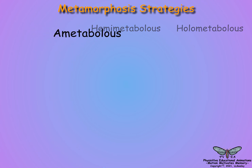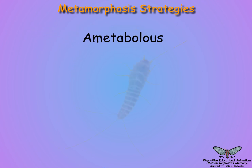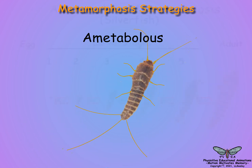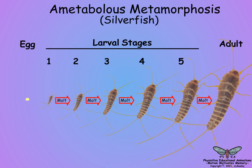Ametabolus insect species consist of the primitive wingless silverfish. Silverfish larvae look identical to adults and only grow larger at each molt, with no morphological metamorphosis evident between the larval and adult forms.